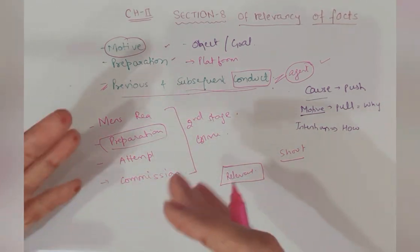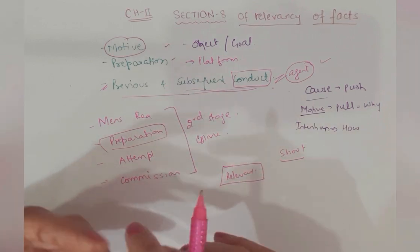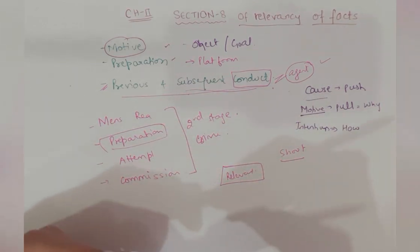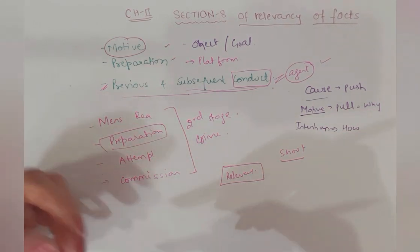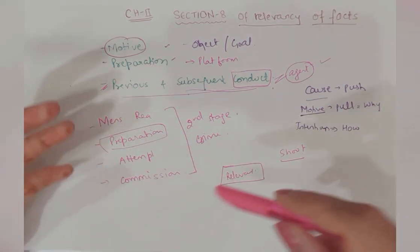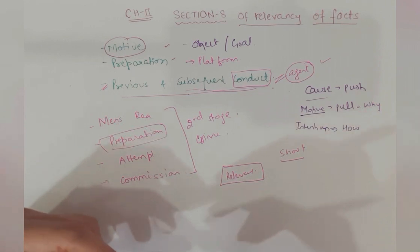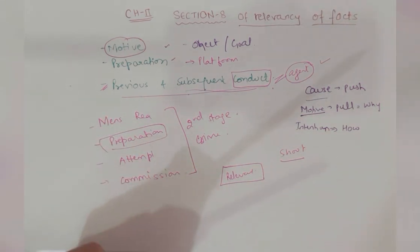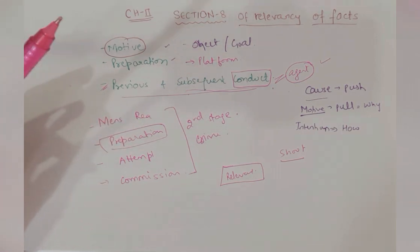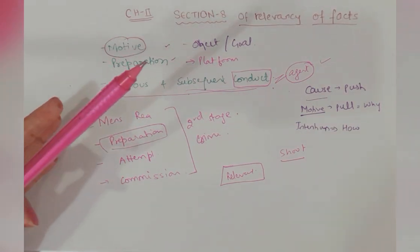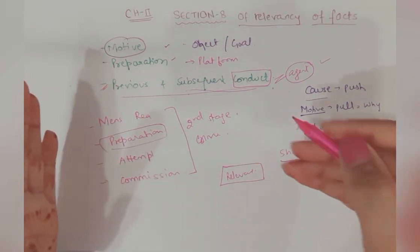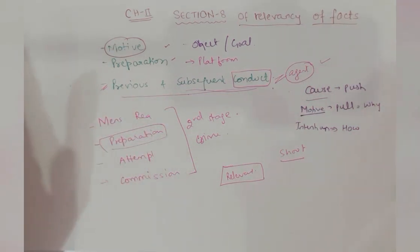A killed B and burned his dead body in the garden. After that when police came, they wanted to dig the garden to see whether the dead body is buried or not, but A refused. He was trying to influence relevant fact, so it somewhere becomes relevant. Whatever conduct tries to hide the relevant fact or stops police from doing their work, that also gets included in relevancy.